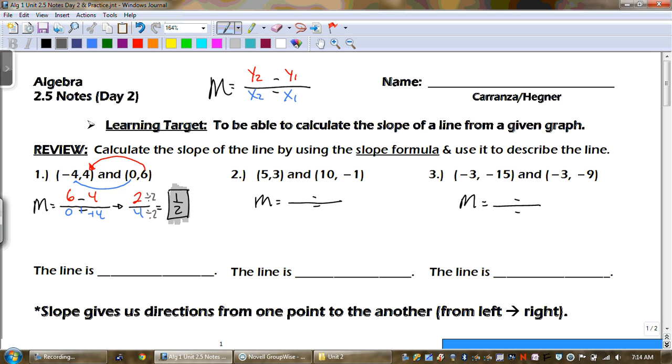So the next thing, describing the line, is it rising, is it falling, zero, horizontal, vertical, undefined? Which one is it? Well, it's a positive slope. So if it's positive, that means our line is rising. Alright, let's do the next one.